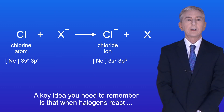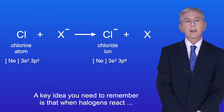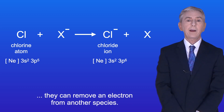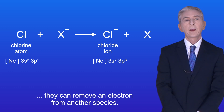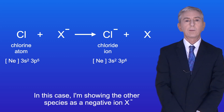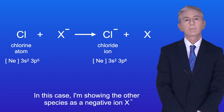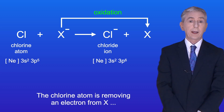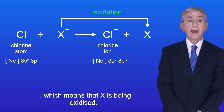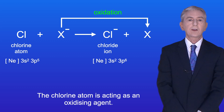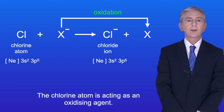A key idea you need to remember is that when halogens react they can remove an electron from another species. In this case I'm showing the other species as a negative ion X minus. The chlorine atom is removing an electron from X, which means that X is being oxidized, and the chlorine atom is acting as an oxidizing agent.